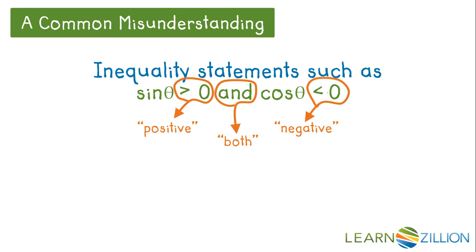In this example, sine is positive in quadrants one and two. Cosine is negative in quadrants two and three. The only quadrant where both of these occur is quadrant two. So, the meaning of our statement is that theta is in quadrant two.